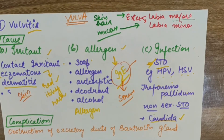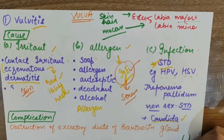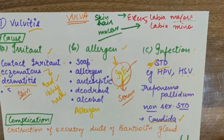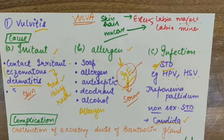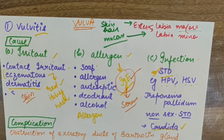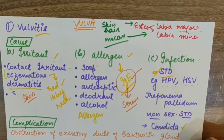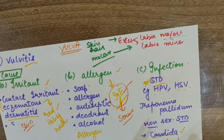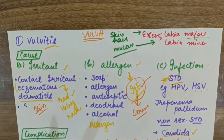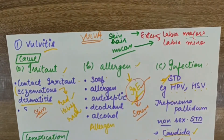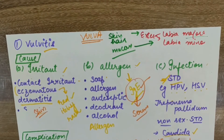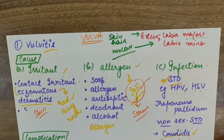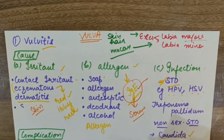There is a complication involving the Bartholin glands. These are small pea-sized glands on either side of the vaginal opening. Their function is secretion to lubricate the vagina. If there is obstruction - for example due to vulvitis - the ducts can become blocked. Because the fluid cannot drain, the ducts dilate, which is painful. This painful dilation of the glands is called a Bartholin cyst.